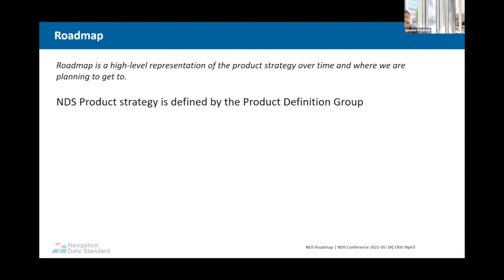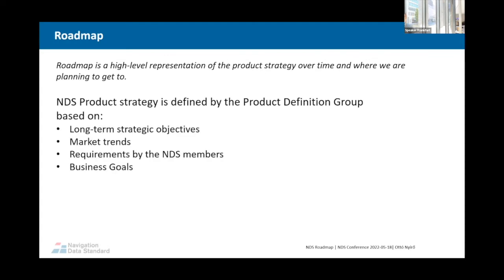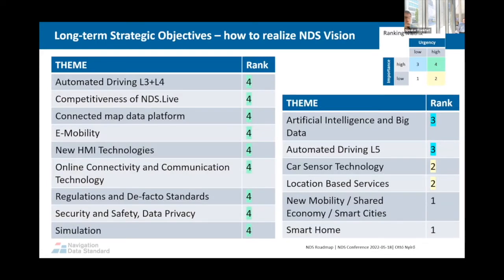In the product strategy, within the NDS association there is a so-called product definition group that consists of volunteered NDS members who are willing to contribute to the product strategy. They are mainly from the product management domain. This group is facilitated by the product manager — by me. What we work on for the product strategy is based on long-term strategic objectives. We also consider market trends, requirements from NDS members, and the business goals of our NDS members. So what are these long-term strategic objectives?